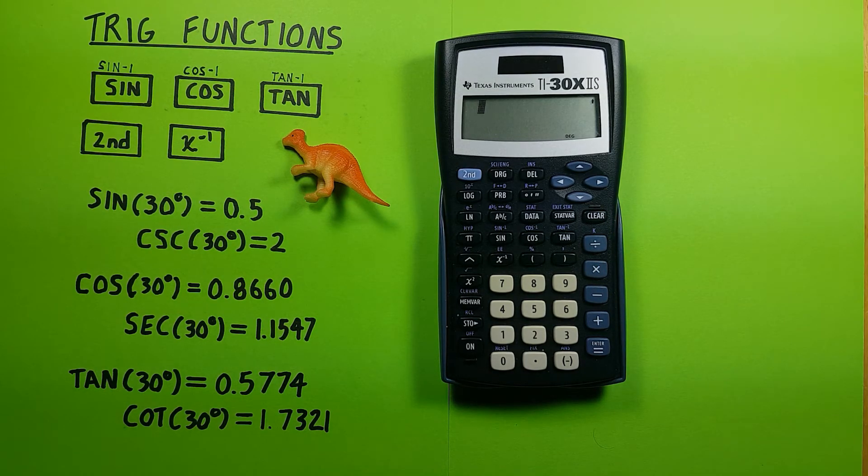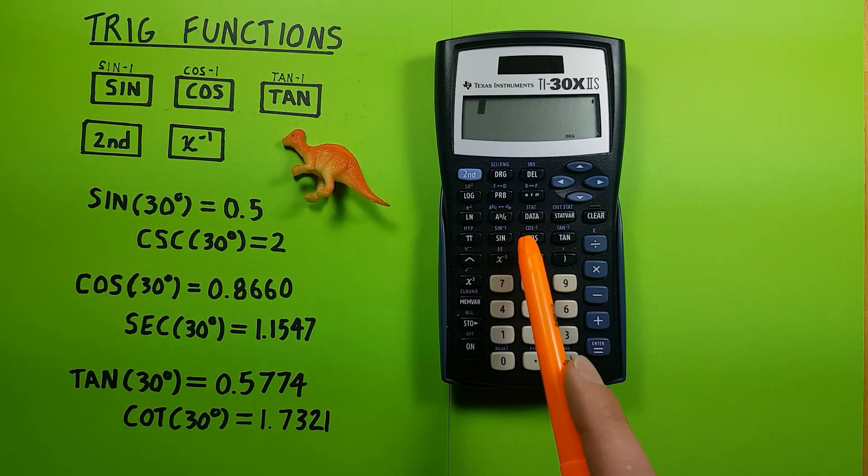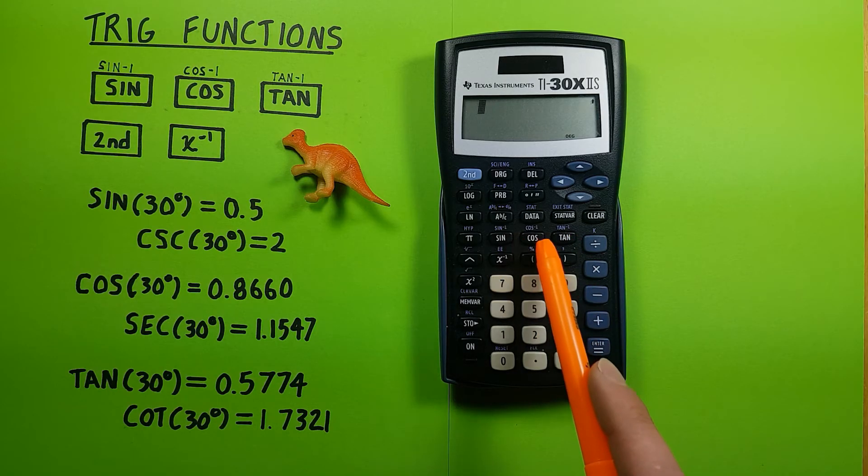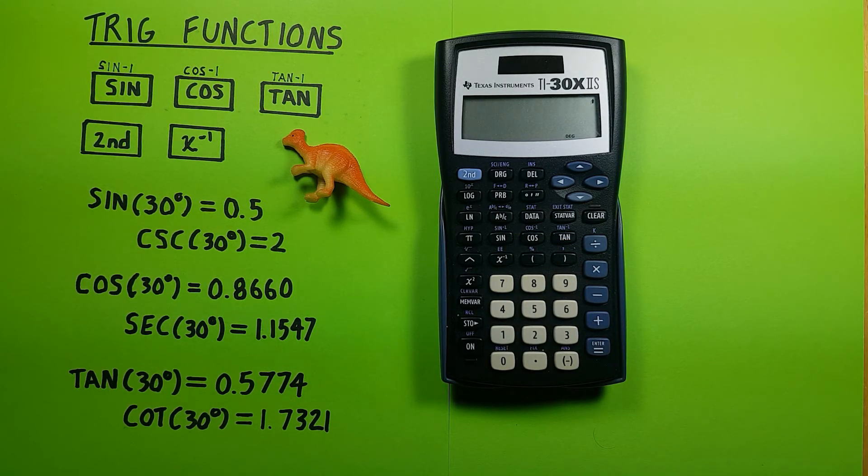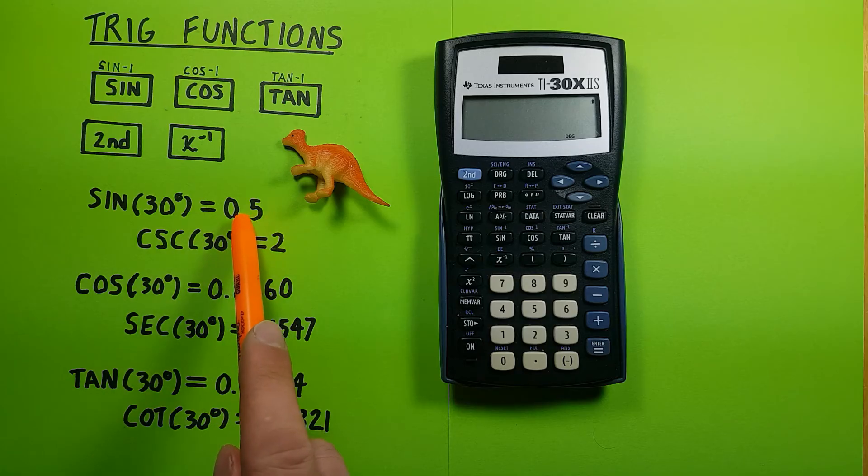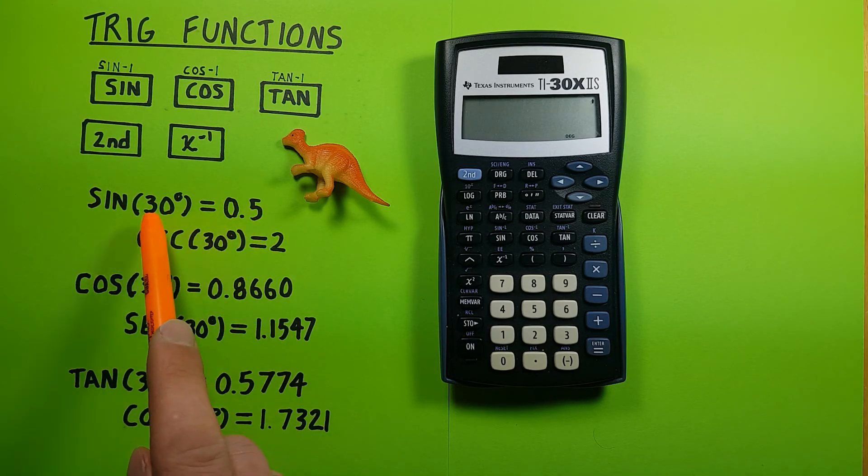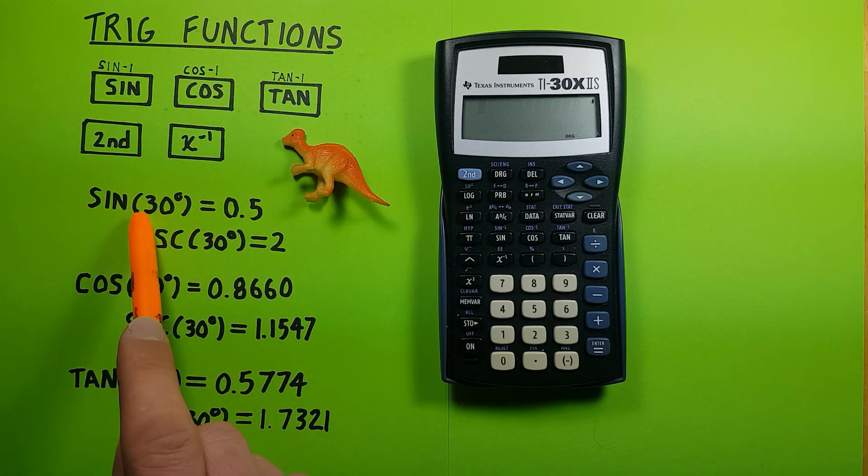We can also do arc sine, arc cosine, and arc tan on this calculator, which are represented by the blue numbers above the sine, cosine, and tan keys, or the second function of these keys. This is used for going from 0.5 and figuring out how many degrees we used sine on to get to that, so basically taking this in reverse.